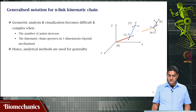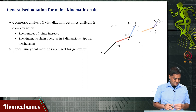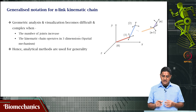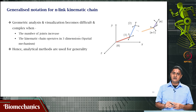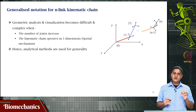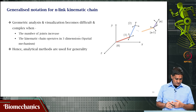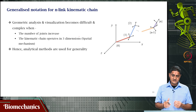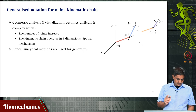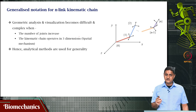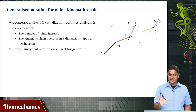Denavit and Hartenberg used some specific notations that are always followed using their method. Every joint is represented by a coordinate frame — a coordinate frame is placed at every single joint — such that the Z axis is always the joint axis. The Z axis of the joint is always the joint axis; this is how it is placed by definition.